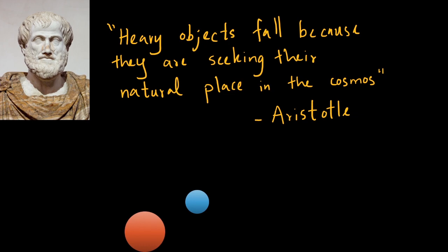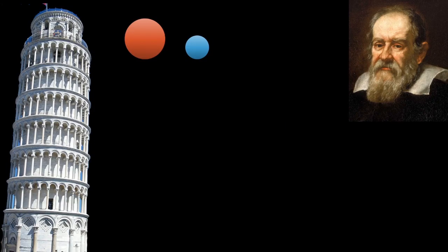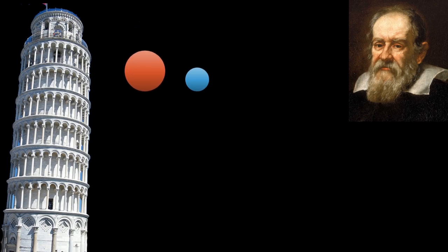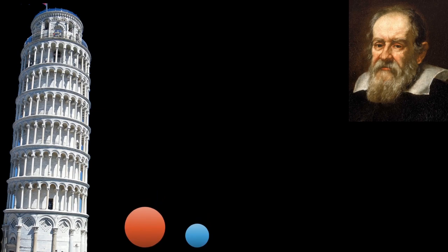But this is something an armchair philosopher would say. For a scientist this wasn't enough, and let's talk about Galileo Galilei. We all know this story where he goes to the top of the Pisa Tower and drops two objects, and he is able to prove that both of these objects fall at the same rate regardless of their mass.